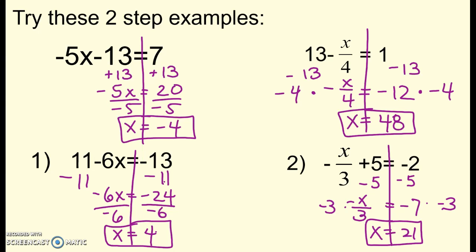So in the first one, I had to get rid of the plus 13 on both sides first. That gave me negative 4 right here. Negative 5x equals 20. Divide by negative 5 on both sides. And then I got x is equal to negative 4. Make sure you plug it back in here. So plug it back in, check, and make sure it works.